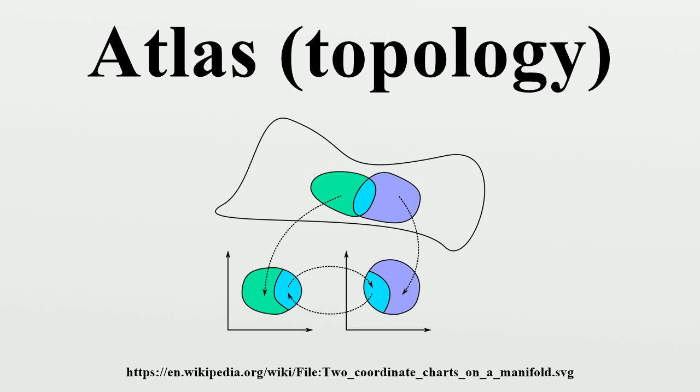The atlas containing all possible charts consistent with a given atlas is called the maximal atlas—that is, an equivalence class containing that given atlas. Unlike an ordinary atlas, the maximal atlas of a given manifold is unique.